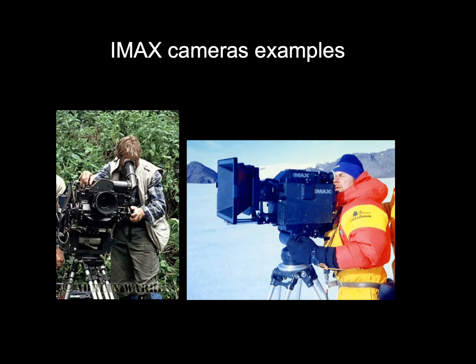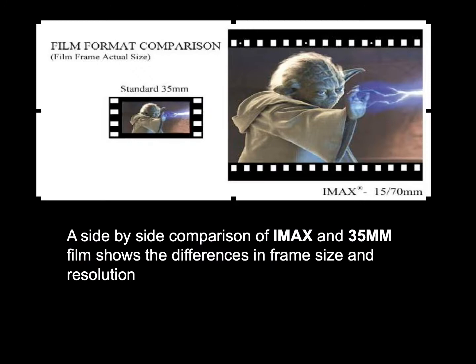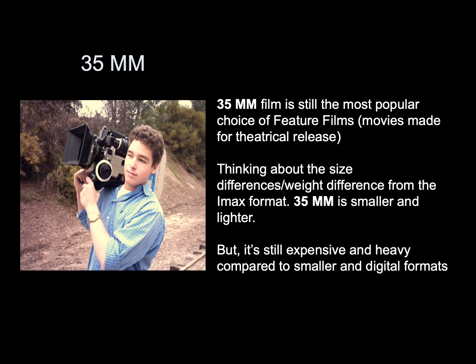Here are two examples of different IMAX cameras. Take some time to look at this side-by-side comparison of an IMAX format — 70mm on the right — and the same image in a 35mm format. It shows the differences in the frame size and the resolution. 35mm is still the most popular choice for feature films made for theatrical release. Think about the size and weight differences from the IMAX format — 35mm is smaller and lighter, but it's still expensive and heavy compared to smaller and digital formats.